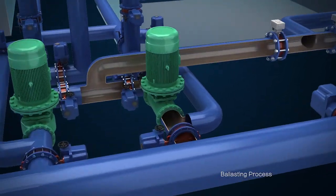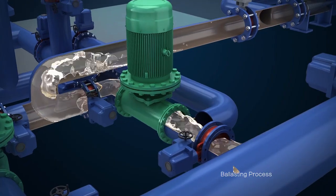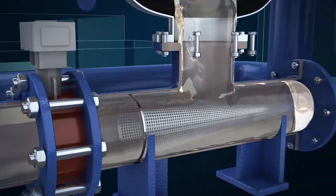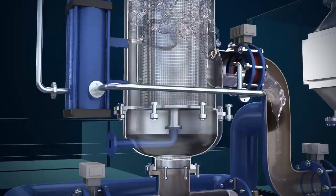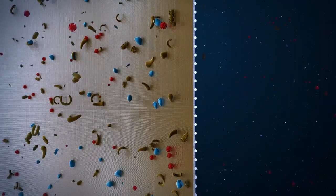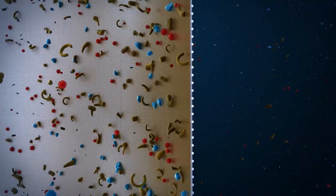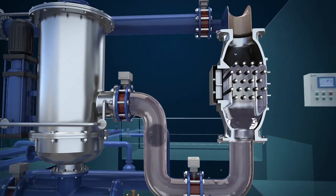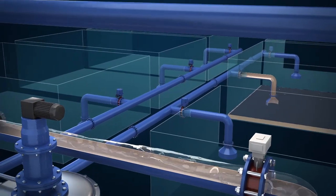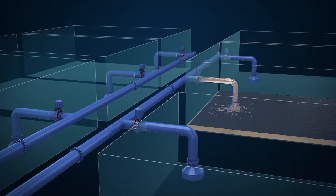Seawater enters the system by ballast pump and passes through strainer prior to entering automatic back flushing filter. Remove organisms and impurities over 20 microns in filter and then passes through EPT unit. Organisms are killed under combined effect of ultraviolet and ultrasound. Finally, seawater is pumped into the ballast tank.